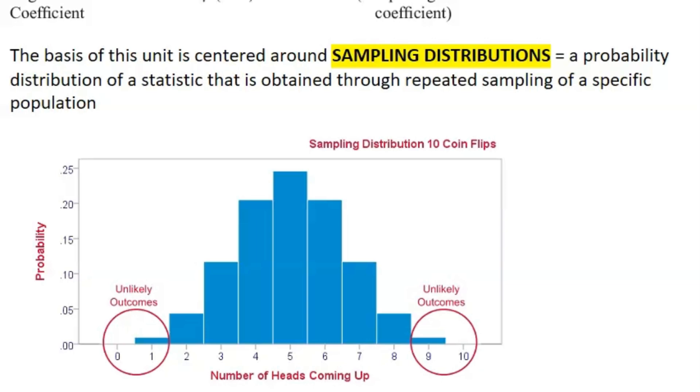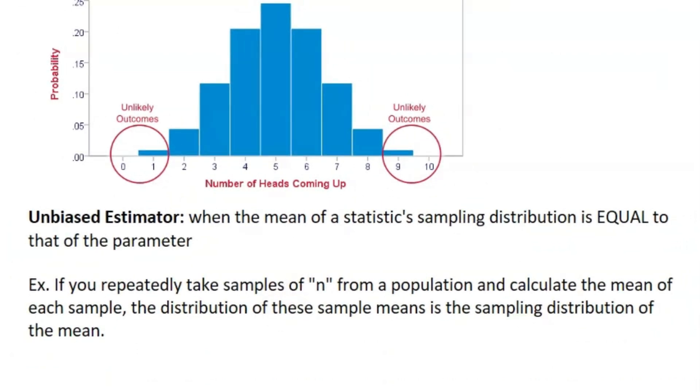Theoretically, it should line up because it's an unbiased estimator, which is when the statistic's sampling distribution is equal to that of the parameter.